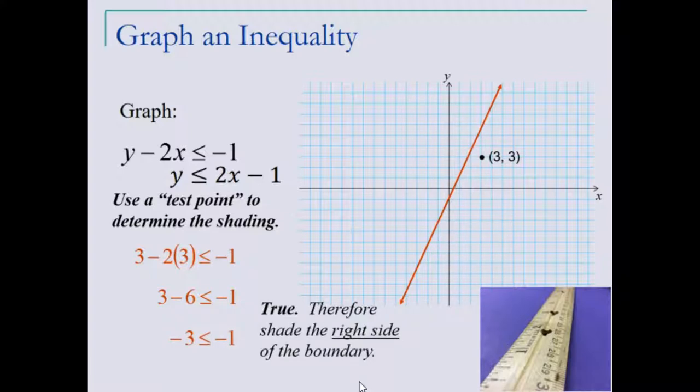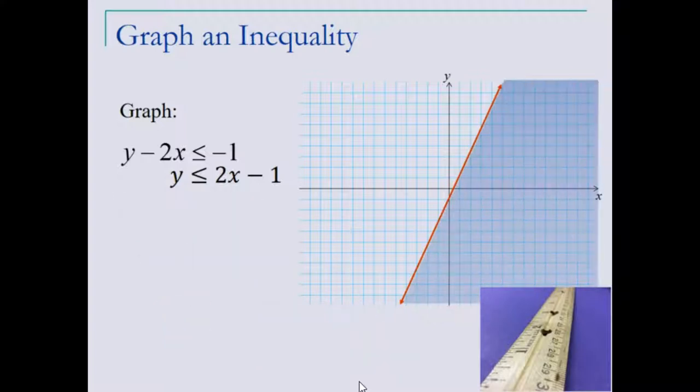Because we have a true statement, we will shade the right side, indicating all points to the right of our boundary line, including the boundary line, provide an infinite number of points that satisfy this linear inequality.